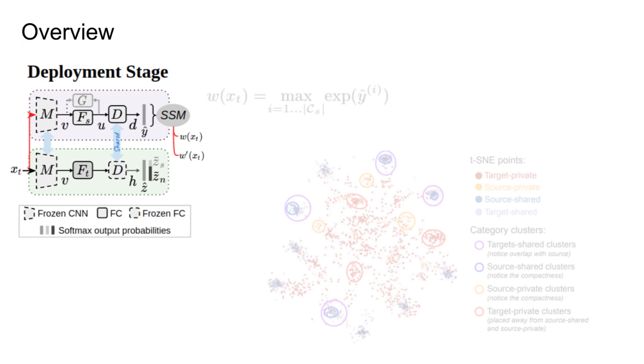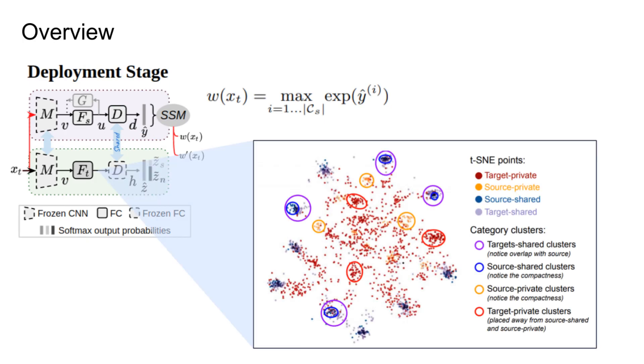In the deployment stage, we describe a source-similarity metric that allows us to adapt the high-level layers for the target domain through a weighted entropy minimization process.